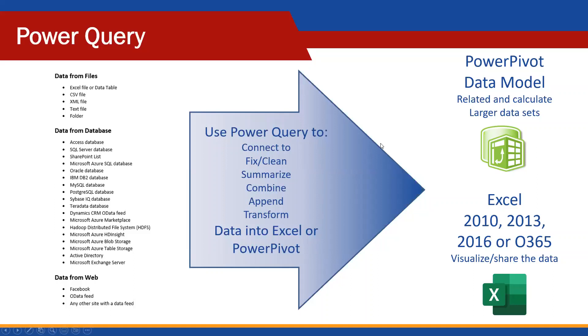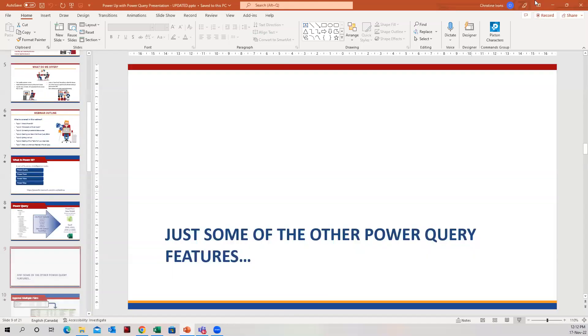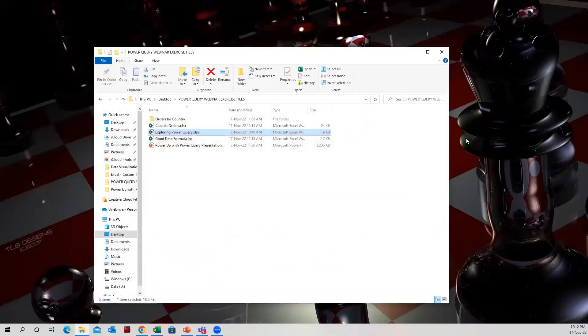You connect to these data sources and bring it into Excel. But you can also use Power Query to clean up the data if it's not in a proper data format. You can clean it up, combine information, summarize information, append information together — you basically transform the data into something you need. And then you spit it back out into Excel, or if you know anything about Power Pivot, you can put it into the Power Pivot data model window.